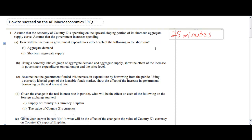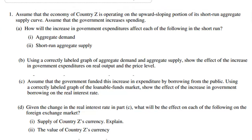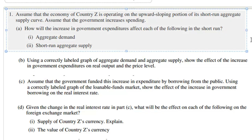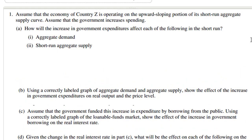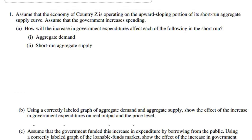Let's begin with number 1, part A. Assume that the economy of country Z is operating on the upward sloping portion of its short-run aggregate supply curve, and that the government increases spending. Before answering part A, I'm going to sketch an aggregate demand-aggregate supply diagram. This is helpful even though the question doesn't require it, because it will help me come up with correct responses. The ADAS diagram includes the price level and real GDP on its two axes.